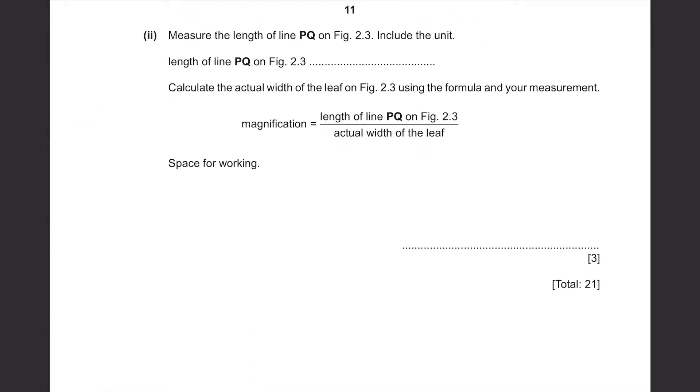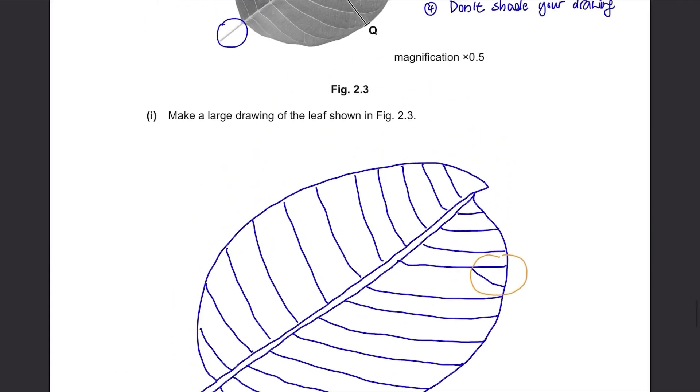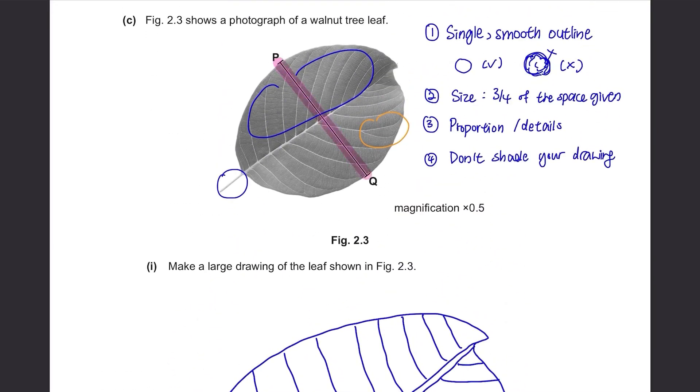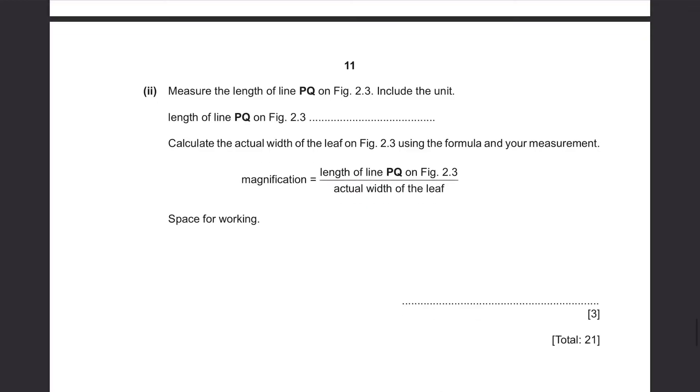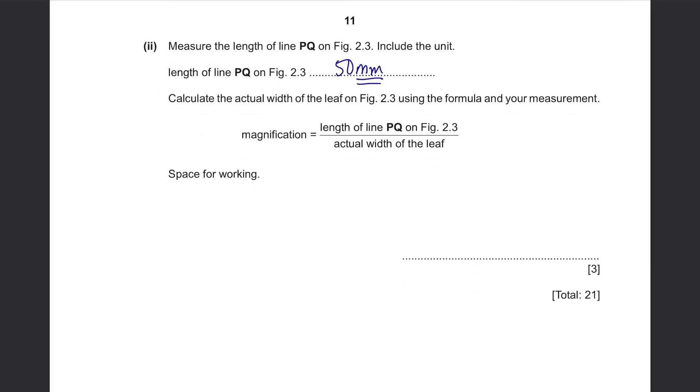Measure the length of line PQ on Figure 2.3. Include the unit. Length of line PQ on Figure 2.3. It's easy. Just use your ruler to measure this line. It should be around 50mm. Don't forget that the units for these lines are in millimeters.